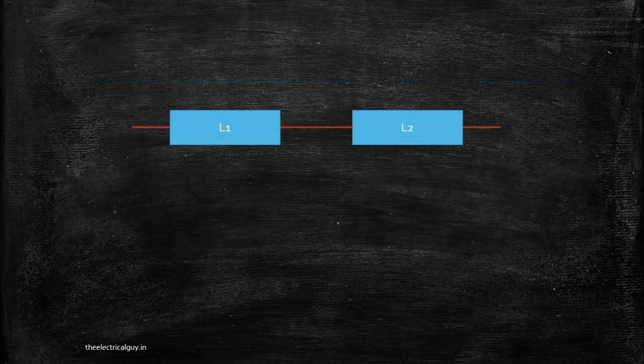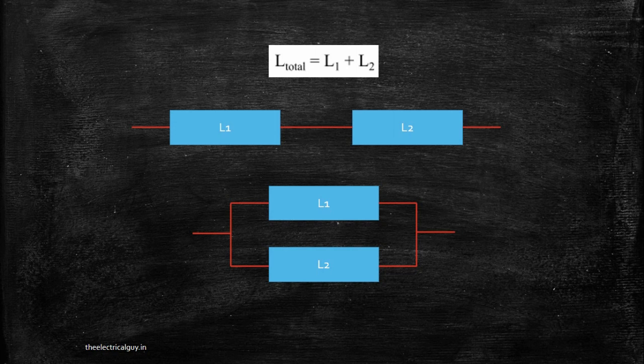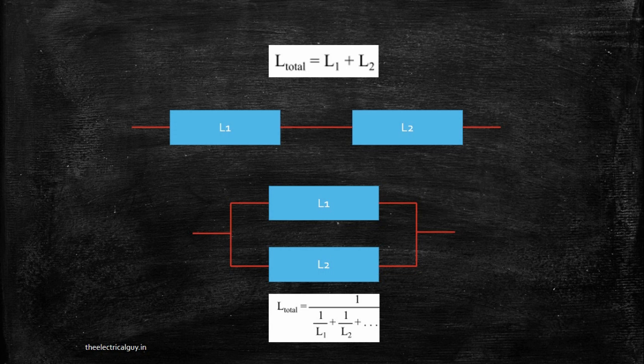Now let's see what happens when we connect two different inductors in series. When you connect two inductors in series, you get L1 plus L2 — inductors add up in series. And when you connect two inductors in parallel, the total inductance diminishes — inductors diminish in parallel.